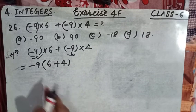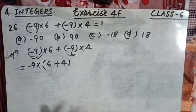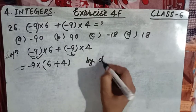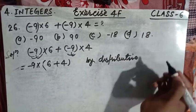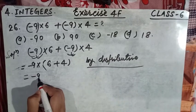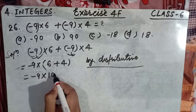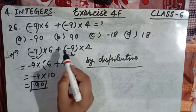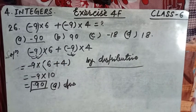This is the distributive law of multiplication over addition for integers. By the distributive law, we have minus nine multiplied by six plus four, which equals minus nine multiplied by ten, which equals minus ninety. Match the option — the answer is minus 90, so option A is correct.